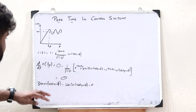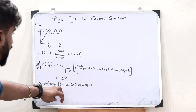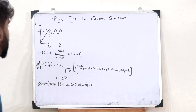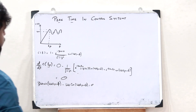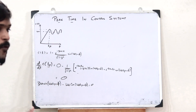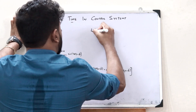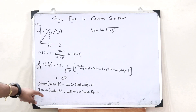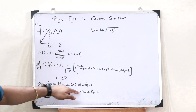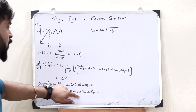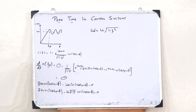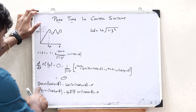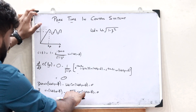What we get is: zeta omega_n sine(omega_d t_p + phi) minus omega_d cos(omega_d t_p + phi) = 0. We know that omega_d = omega_n times root of 1 minus zeta squared. Substituting this, we get zeta omega_n sine(omega_d t_p + phi) minus omega_n root of 1 minus zeta squared into cos(omega_d t_p + phi) = 0. Since this equals 0, the two omega_n terms cancel.